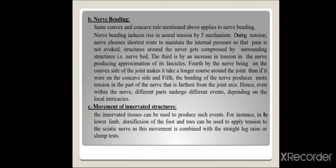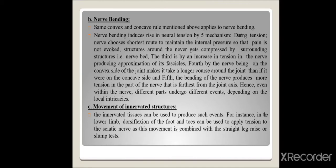Nerve movement related to movement of innervated structures: the innervated tissue, such as muscle in the NMJ, can be used to apply tension to nerves. For example, in the lower limb, dorsiflexion of foot and toes alone does not activate the sciatic nerve. However, when combined with SLR or the slump test, it applies tension to the sciatic nerve — making it the target of the neurodynamic test.